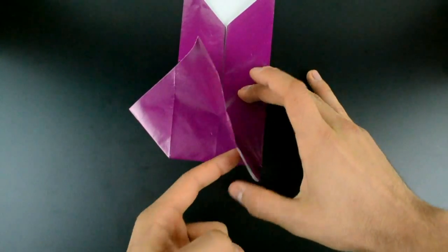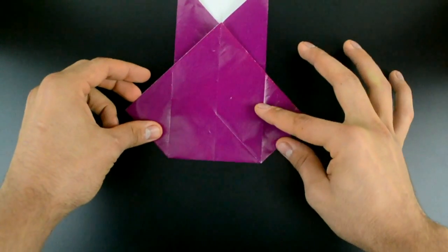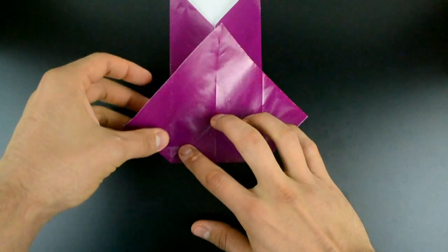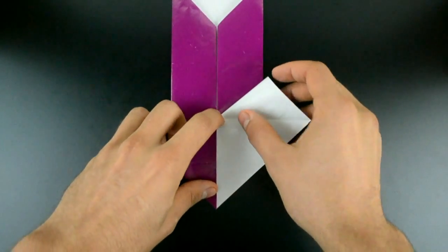Undo. And repeat on the left side. Bring down as much as possible. And flatten to make a crease.